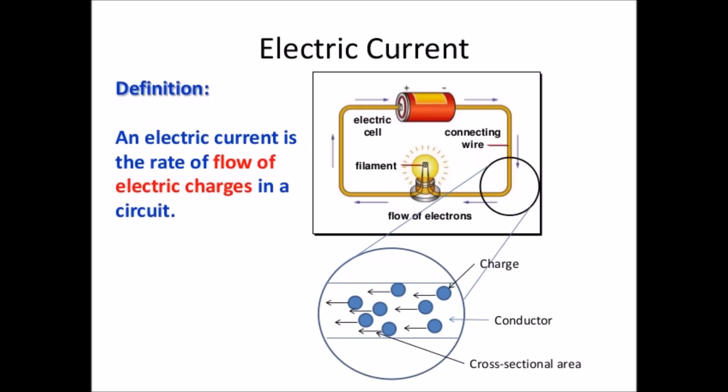Electric current is the flow of electricity. When you think of the word current, you think of maybe a river or the ocean or something like that. It's the same principle. It's the flow of electrons.